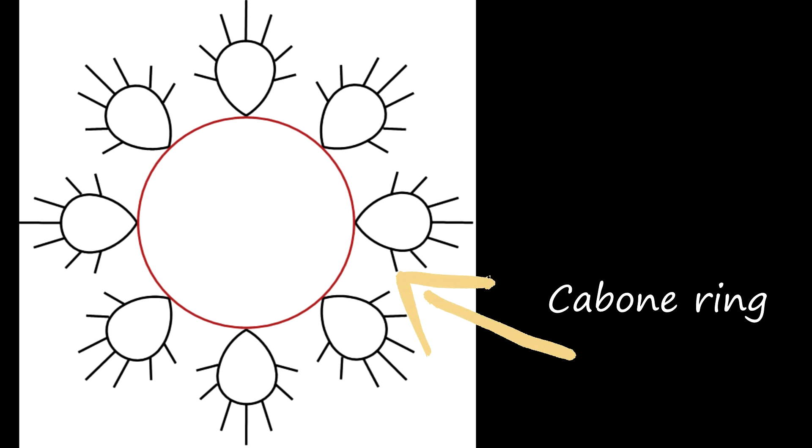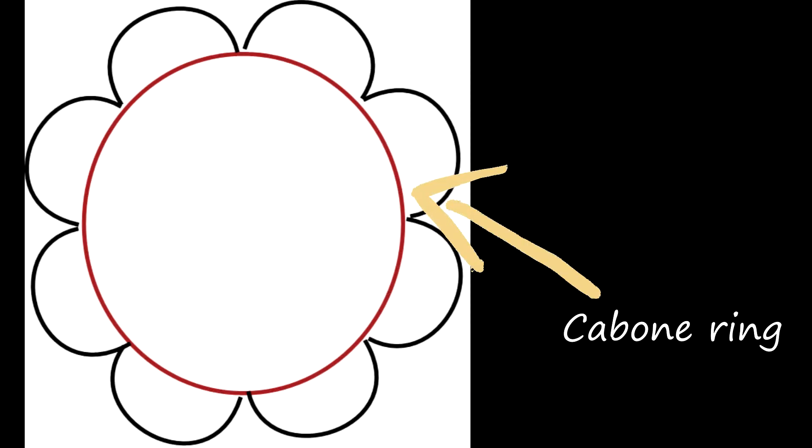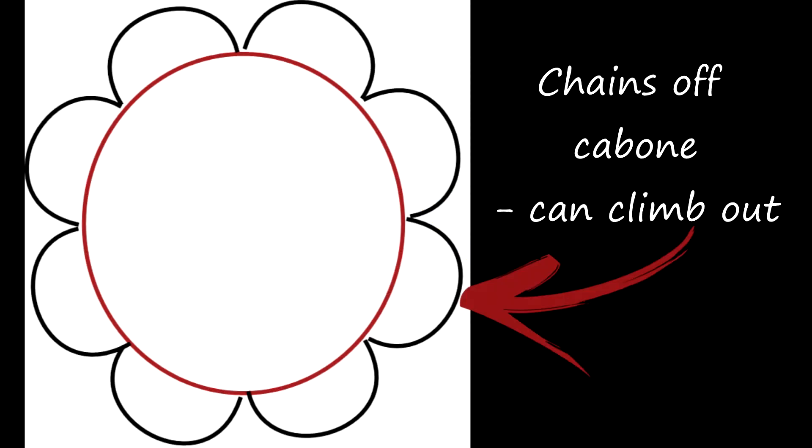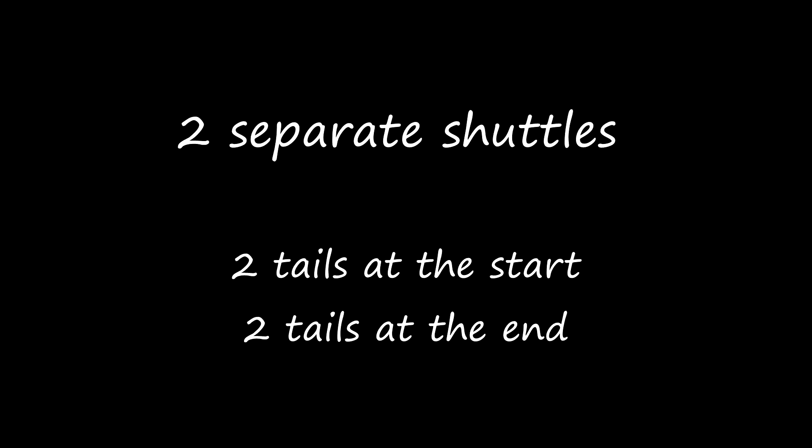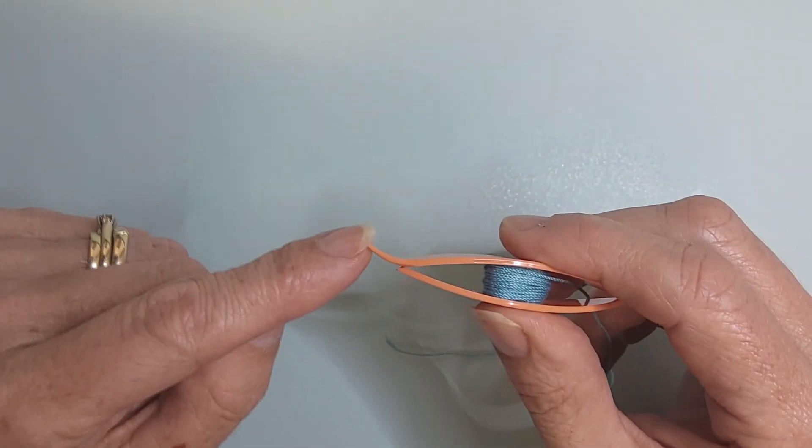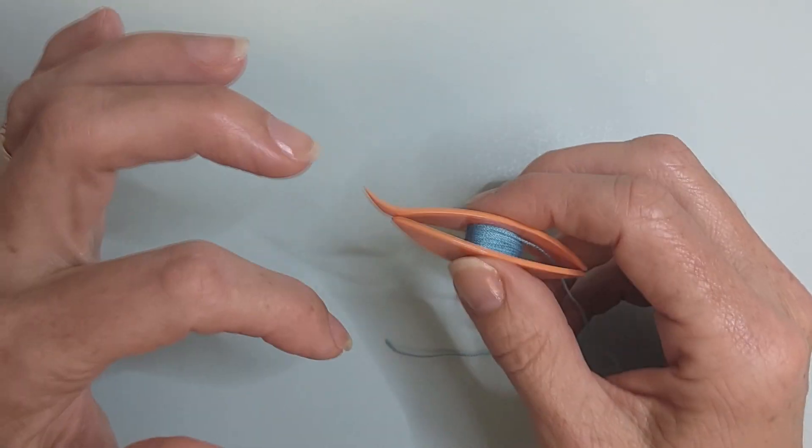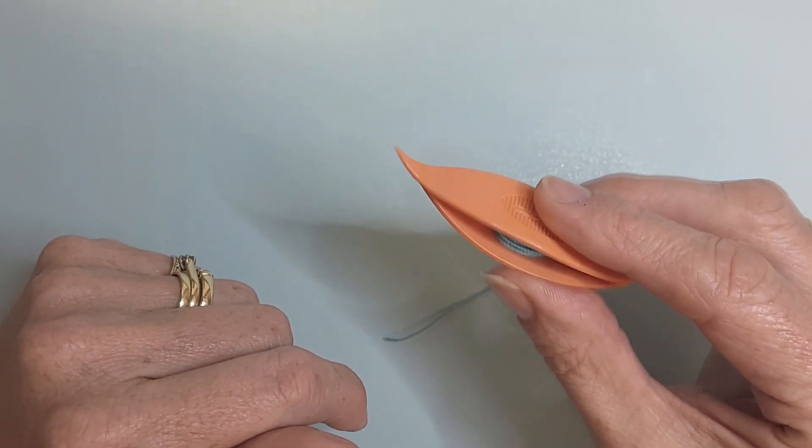We only need one shuttle to cover our ring, but it's what happens in our pattern afterwards that will determine what we work with. If you can't climb out from the cabone ring, you can use one shuttle and hide tails as you cover the ring. If you can climb out, then you have a choice of continuous thread or two shuttles. Continuous thread means you'll only have two tails to worry about at the end. Working with two shuttles will give you two tails at the start and two tails at the end. I'd strongly suggest using a shuttle with a pick or a hook. You can use a separate crochet hook, but you're going to be constantly putting it down and picking it up.